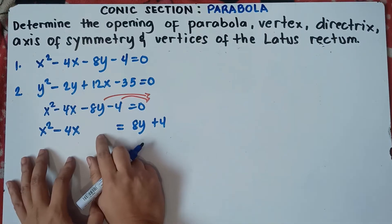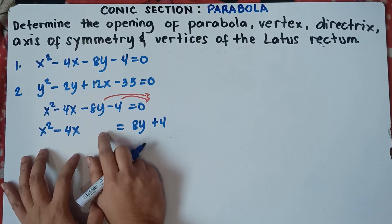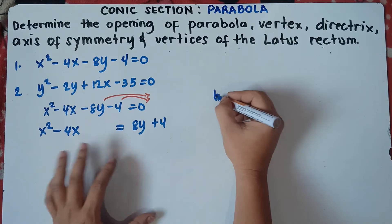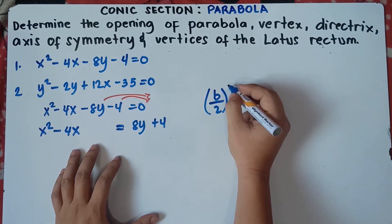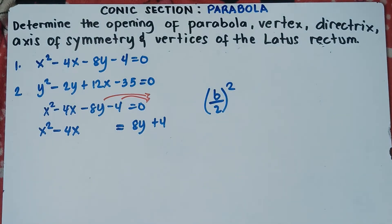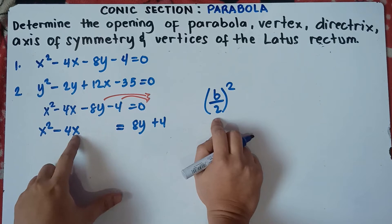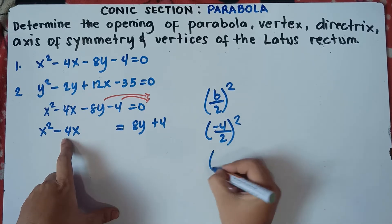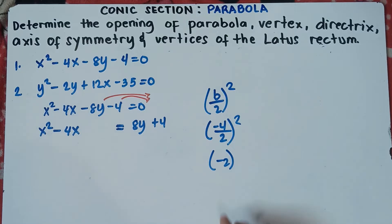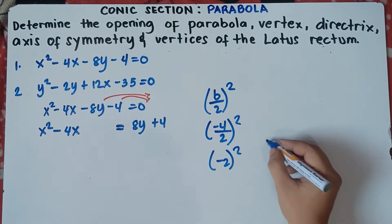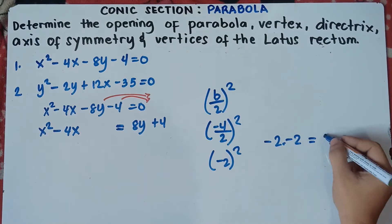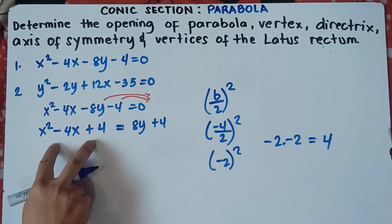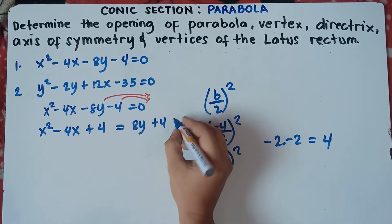We leave a space because we will add a new constant using completing the square. Next step is to add a new constant. The completing the square formula is (B divided by 2) squared. Our B is the coefficient beside the linear term x, which is negative 4. So this becomes (negative 4 divided by 2) squared, which is (negative 2) squared, equaling positive 4. Therefore, we add 4 to the left side to make it a perfect square trinomial, and also add 4 to the right side.